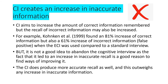A final limitation is that the cognitive interview creates an increase in inaccurate information. While it aims to increase correct information remembered by eyewitnesses, recall of incorrect information may also increase. Conkin et al 1999 found an 81% increase in correct information but also a 61% increase in incorrect information — so-called false positives, where the person believes they're giving correct information but they're not. However, it's not a good idea to abandon the cognitive interview entirely, as the increase in accurate recall outweighs any increase in inaccurate information.